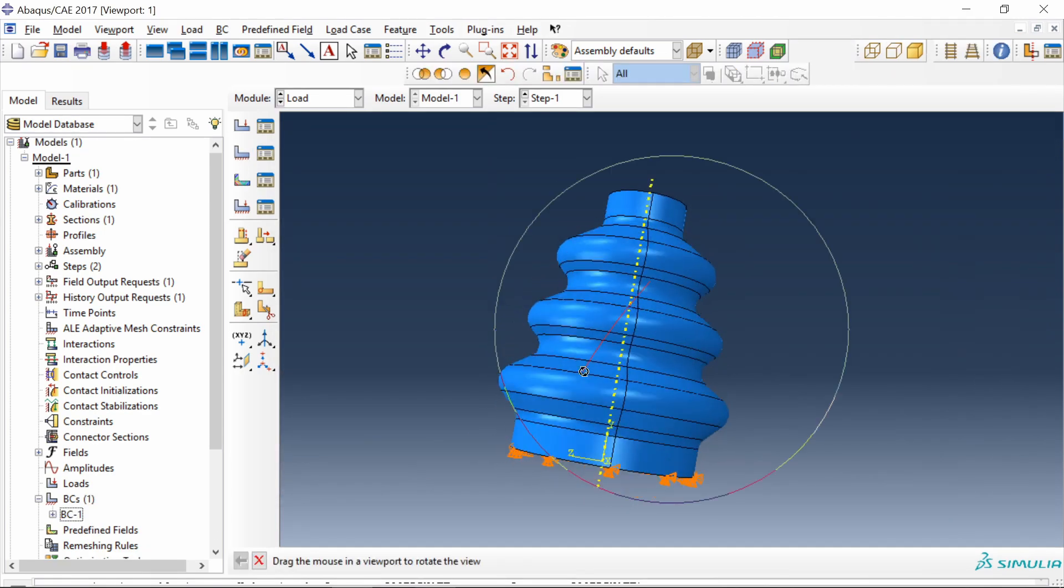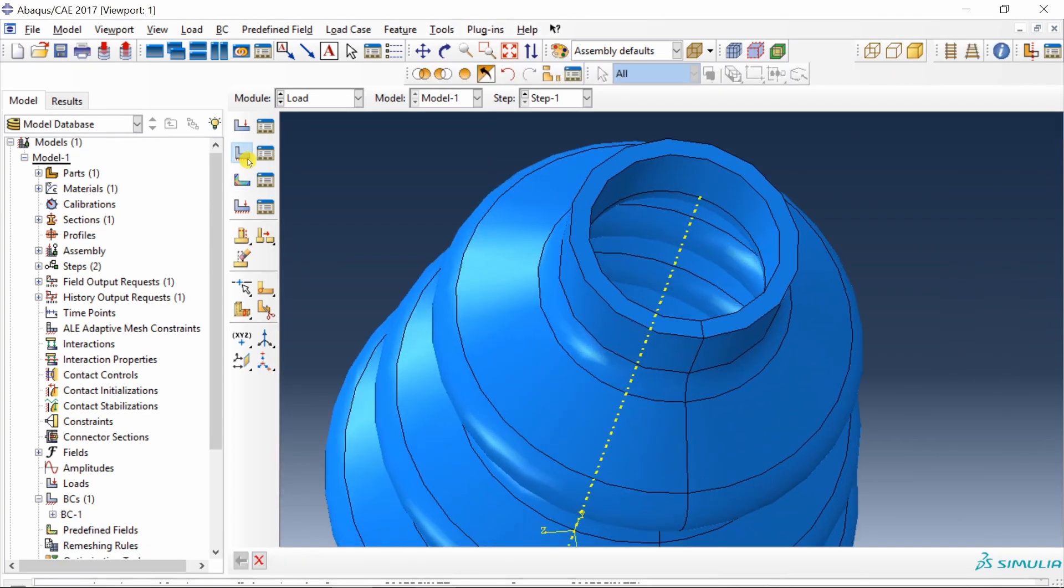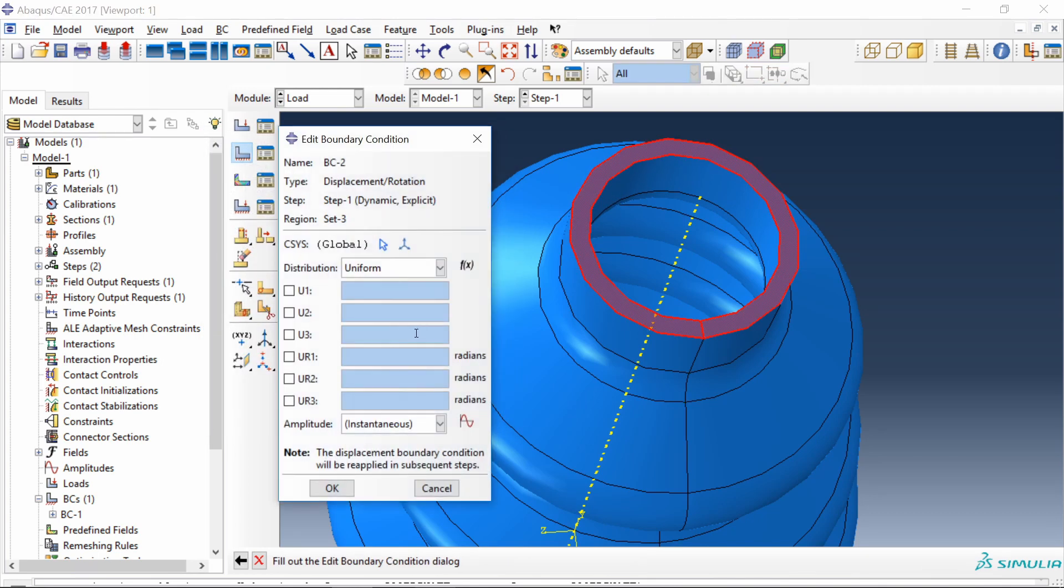And then I am going to apply a displacement boundary condition on this top surface as well. We are going to compress it. So u2 minus 10.